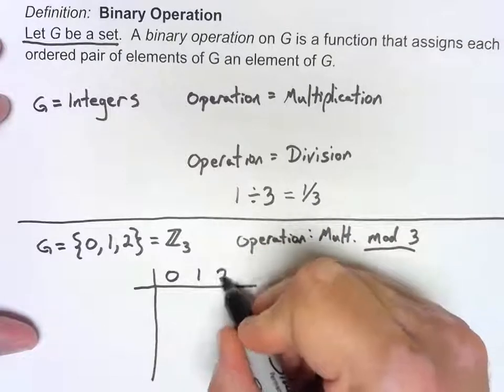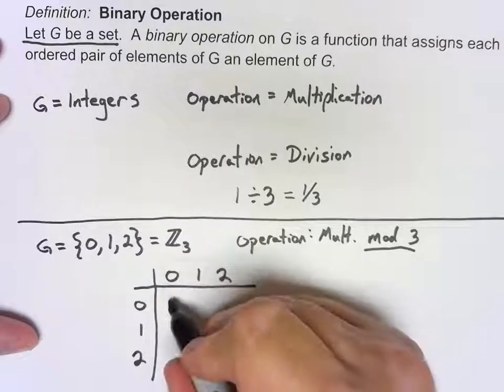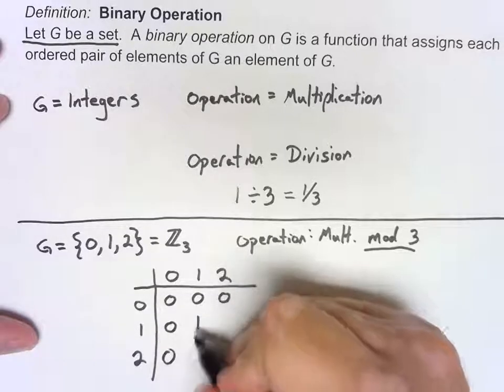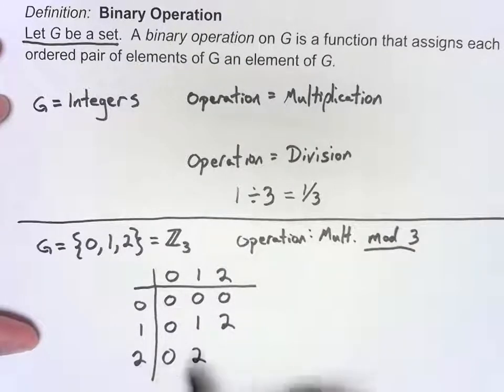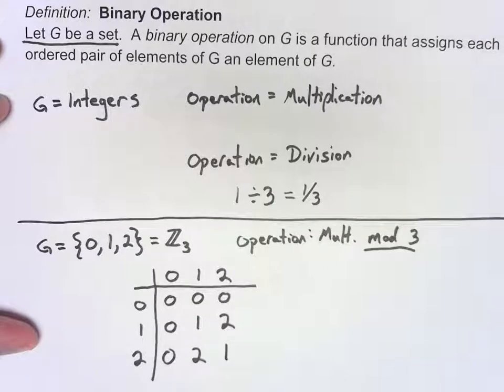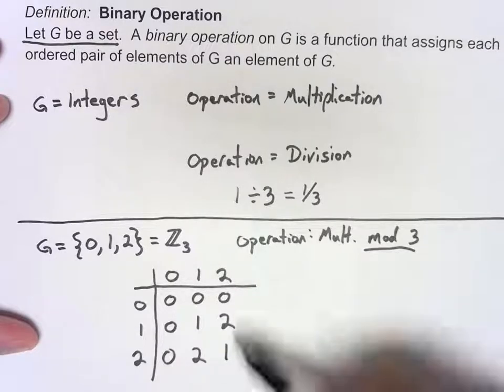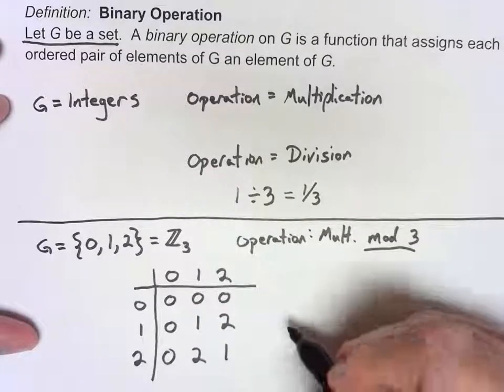I've got 0, 1, and 2. 0 times 0 is 0. In fact, 0 times anything is 0. 1 times 1 is 1. 1 times 2 is 2. 2 times 1 is 2. But 2 times 2 isn't 4 when I take it mod 3. I get 4, subtract 3 from it, and so it actually gets me 1. So now, no matter what two elements I get, I'm always getting something in 0, 1, or 2. Therefore, this is in fact a binary operation.